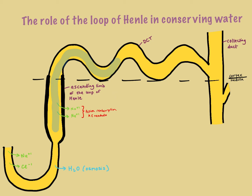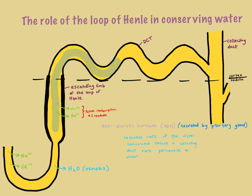Now let's look at the involvement of antidiuretic hormone. ADH is secreted by the pituitary gland — a gland at the base of your brain — which means it can make changes all the way down in your kidneys in your lower abdomen. The role of antidiuretic hormone is to make the distal convoluted tubule and collecting duct more permeable to water.